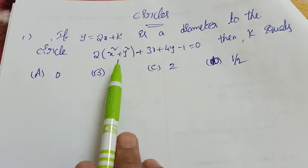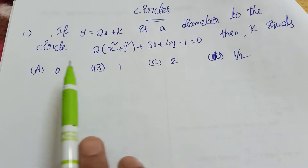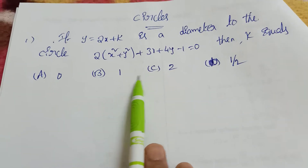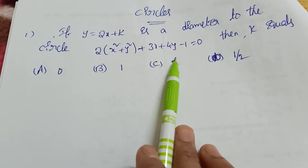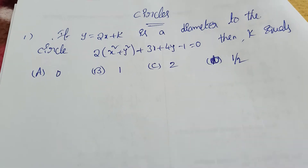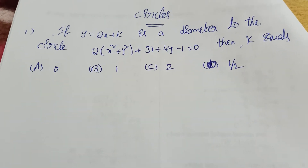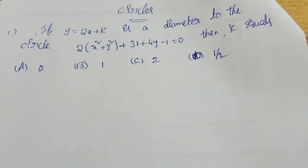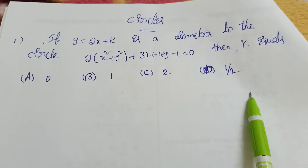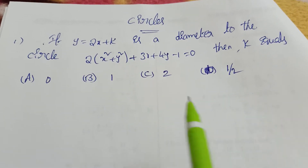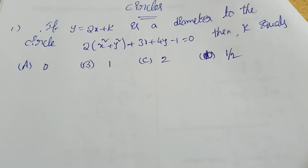The first question: if y = 2x + k is the diameter of the circle given by 2x² + y² + 3x + 4y - 1 = 0, then find k. The options are 0, 1, 2, and 1/2.